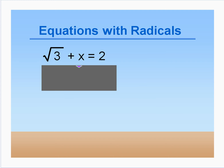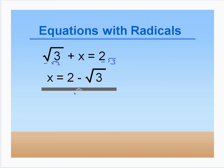Here's our first example. We have √3 + x = 2. This √3 is really just a number, so we want to get rid of it by subtracting √3 from both sides. That gives us x = 2 − √3, and that's your answer. If you want an exact answer, you leave it like that.